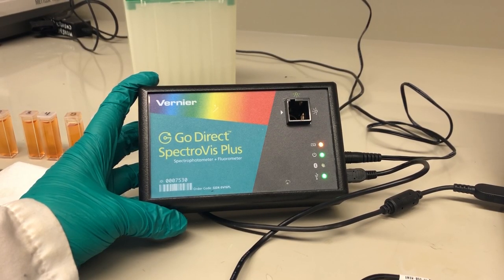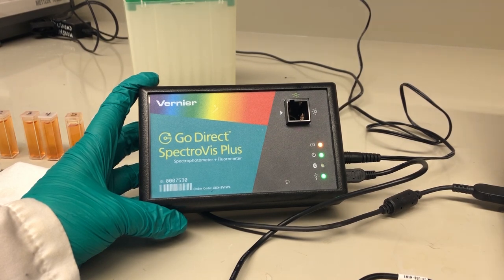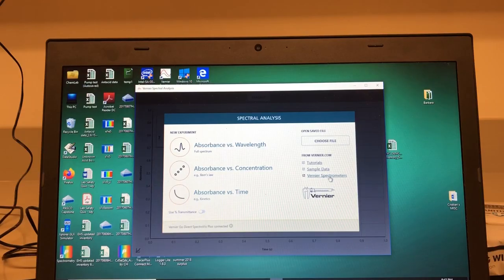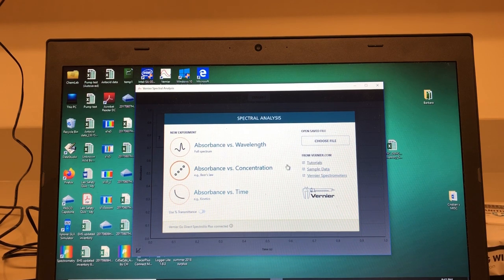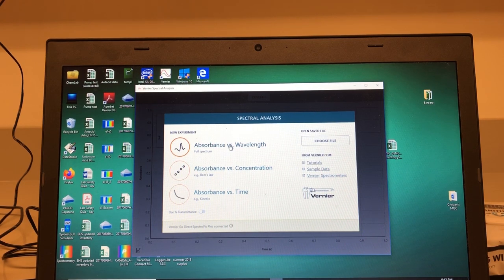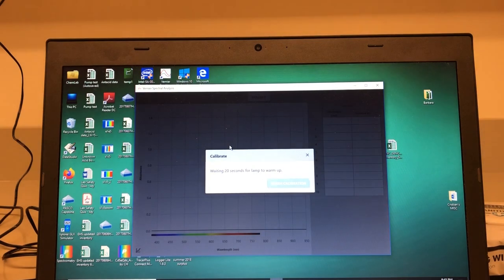Our next step to completing our lab is to connect the Vernier GoDirect SpectroVis Plus to the computer. We will be calibrating the spectrophotometer first. At the home window of our Spectral Analysis 4 software, we will click absorbance versus wavelength.